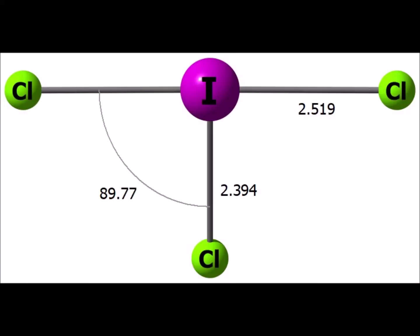Five electron domains with two lone pairs gives us the T-shaped structure shown here. Note that this is the structure for iodine trichloride in the gas phase; it has a different, more complicated structure in liquid or solid phase. I pity the fool that doesn't remember that ICl3 has a T-shaped structure and that it is dsp3 hybridized at the central iodine atom.